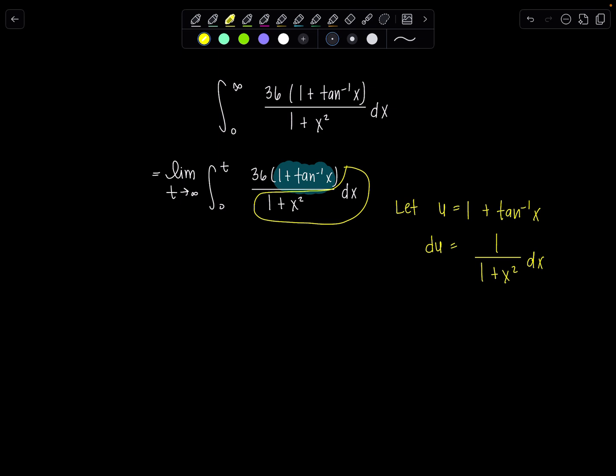We do need to also change those limits of integration though. They currently belong to the variable of the integral, which is x. So 0 and t get substituted in for x right there. So u of 0 is 1 plus tan inverse of 0. Tan inverse of 0 is 0, so my new lower limit is going to be 1. And then u of t is 1 plus tan inverse of t. And you're just going to leave it like that.